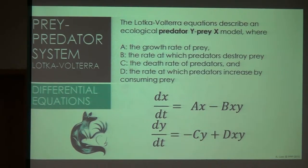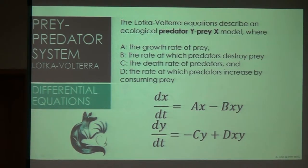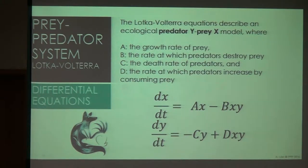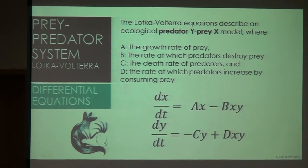The first equation gives the change in the prey's population: its own growth rate, AX, minus the rate at which it is preyed upon, BXY. The second equation gives the change in the predator's population: growth fueled by food supply, BXY, minus the natural death rate, CY.